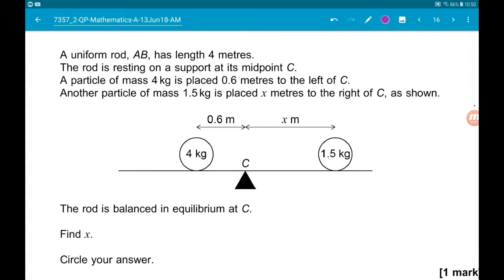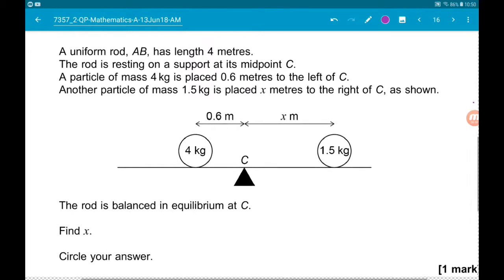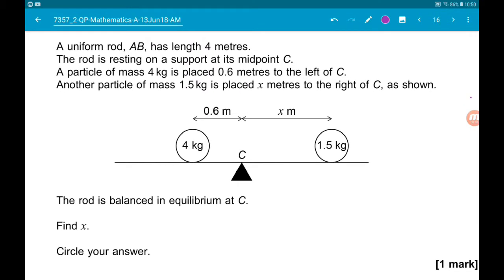Another particle of mass 1.5 kilograms is placed X meters to the right as shown. We're told that the rod is in equilibrium at point C. Find X.